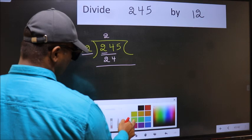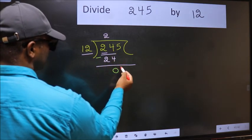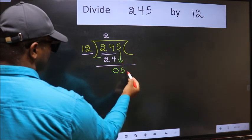Now we should subtract. 24 minus 24 is 0. After this, bring down the beside number. So 5 down.